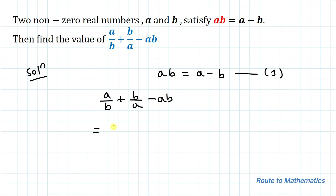In the next step, let's take the LCM of a/b plus b/a minus ab. Taking LCM, we get ab in the denominator and in the numerator, by cross multiplication, we have a squared plus b squared minus ab.